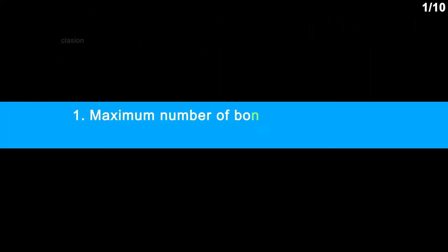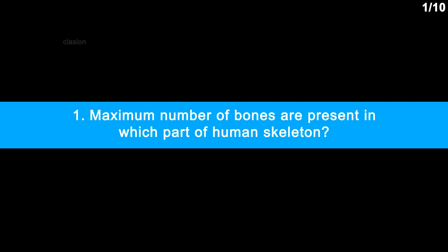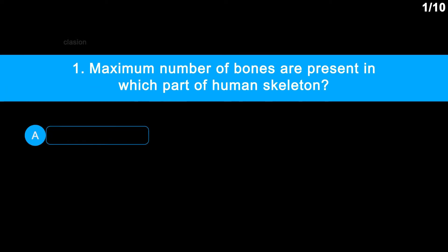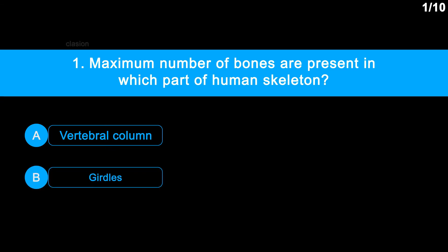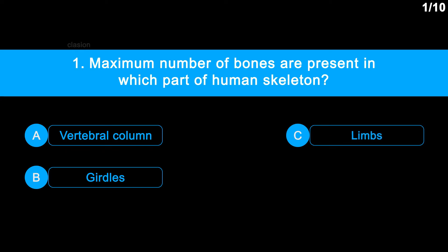Question 1: Maximum number of bones are present in which part of the human skeleton? Option A: vertebral column. Option B: girdles. Option C: limbs. Option D: skull.